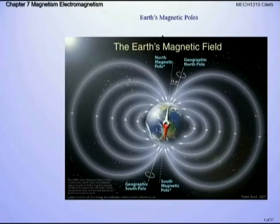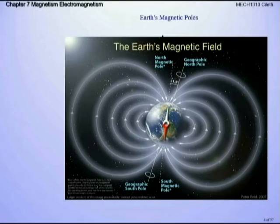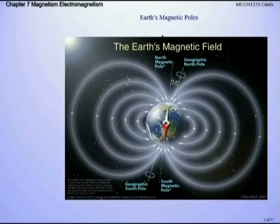There are really two different north poles: the geographic north pole, which we use for maps, and magnetic north. Geographic north moves because the Earth is rotating and tilting, while magnetic north tends to stay the same. That's why compasses always work reliably.